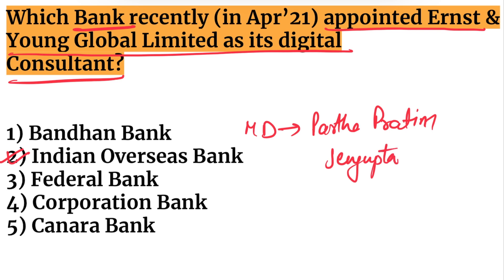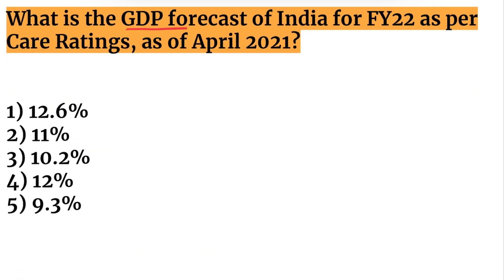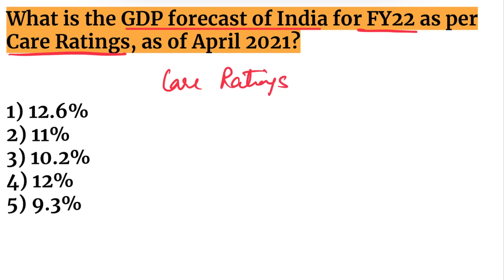What was the GDP forecast for India for fiscal year 2022 as per CARE Ratings? This forecast was released in April 2021. The GDP forecast by CARE Ratings for India for FY2022 is 10.2%.